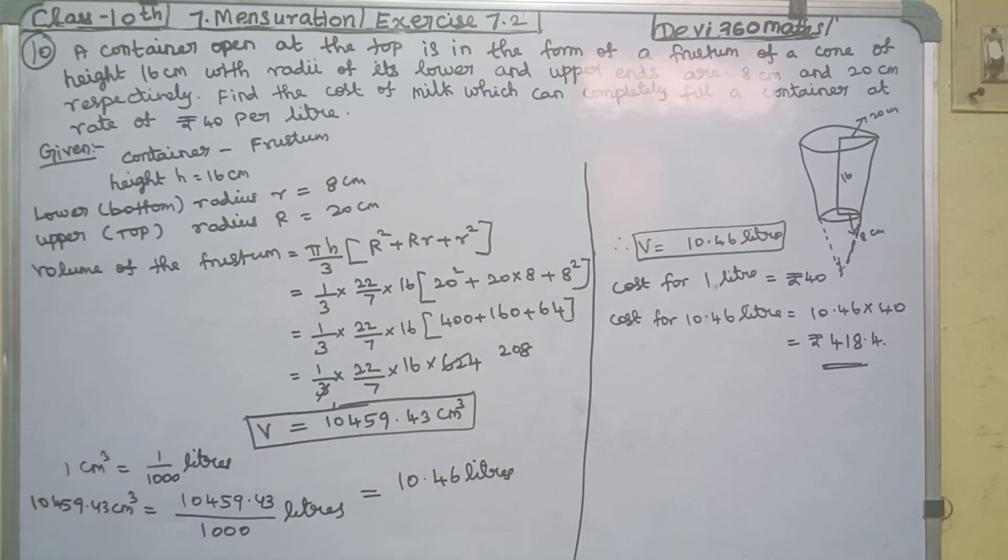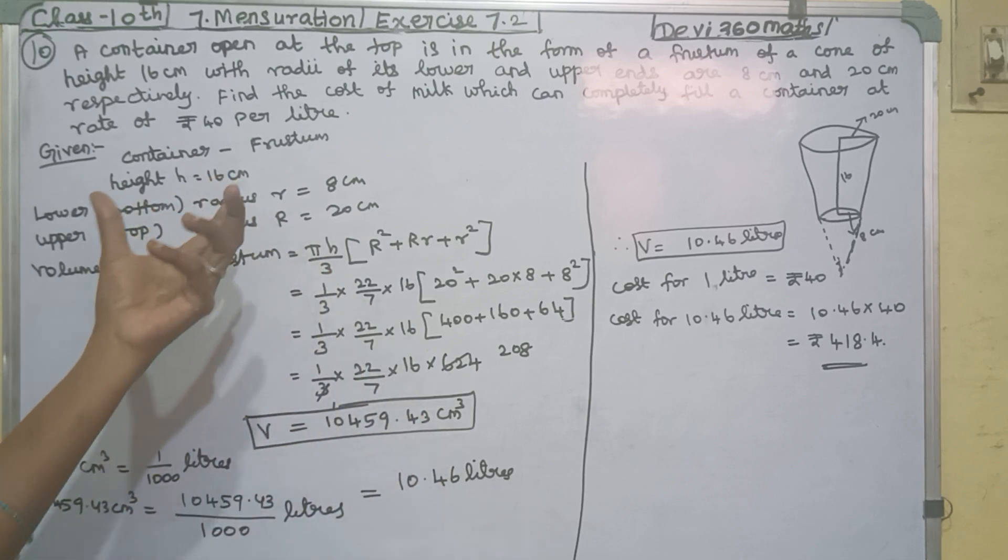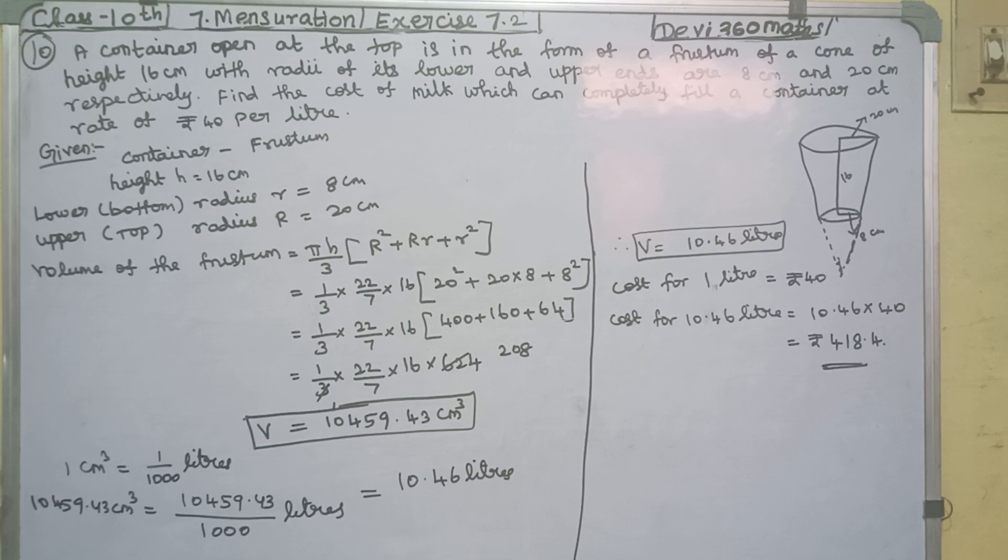We need to convert cm³ to liters. How do you convert a centimeter cube? 1 cm³ equals 1 by 1000 liters. So we divide 10,459.43 by 1000. We divide by moving the decimal point three places to the left.